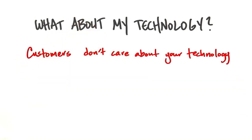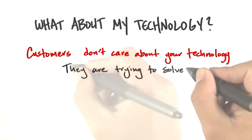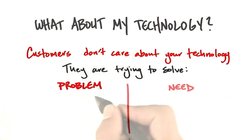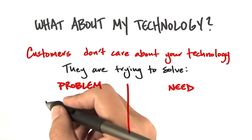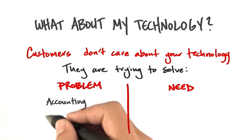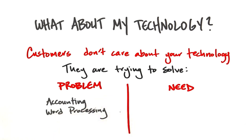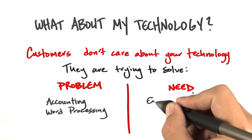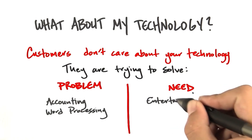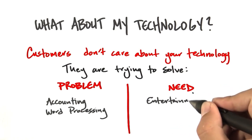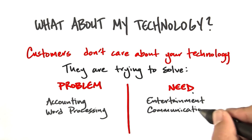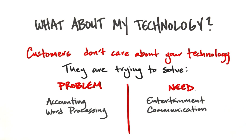Customers really don't care about your technology. Customers are trying to solve a problem or fulfill a need. By the way, we'll be talking about this through multiple lectures. The difference between a problem and a need is: a problem is, I have an accounting problem or I want to use a word processor. But there are other things that human beings do, like I want to be entertained, or I want to have a date. Those are some basic hardwired social needs. Or I want to communicate with my friends, like Facebook or Twitter — those are needs.